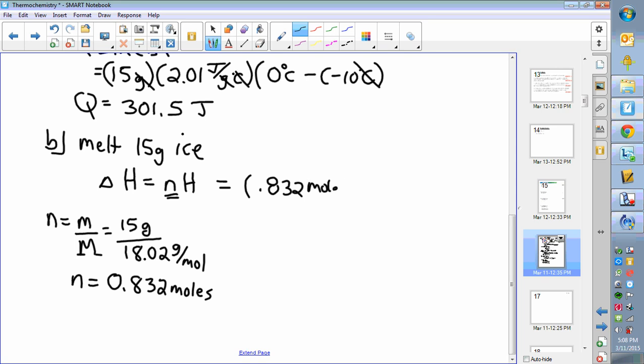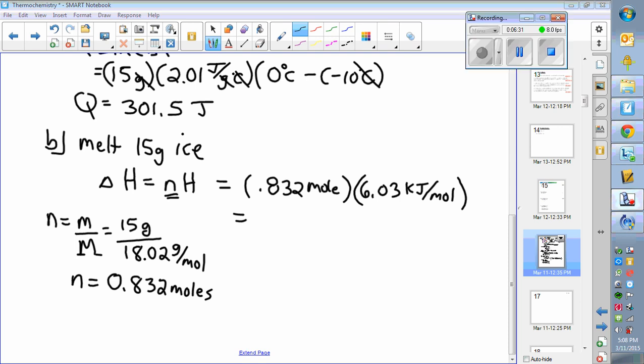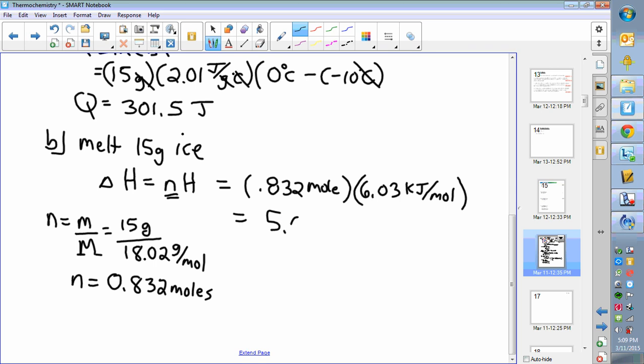So we'll take our moles first—0.832 moles—and we multiply that by 6.03 kilojoules per mole, which is the molar enthalpy of fusion because you're dealing with the freezing point of water. We'll plug that into our calculator, that gives me 5.019 kilojoules.